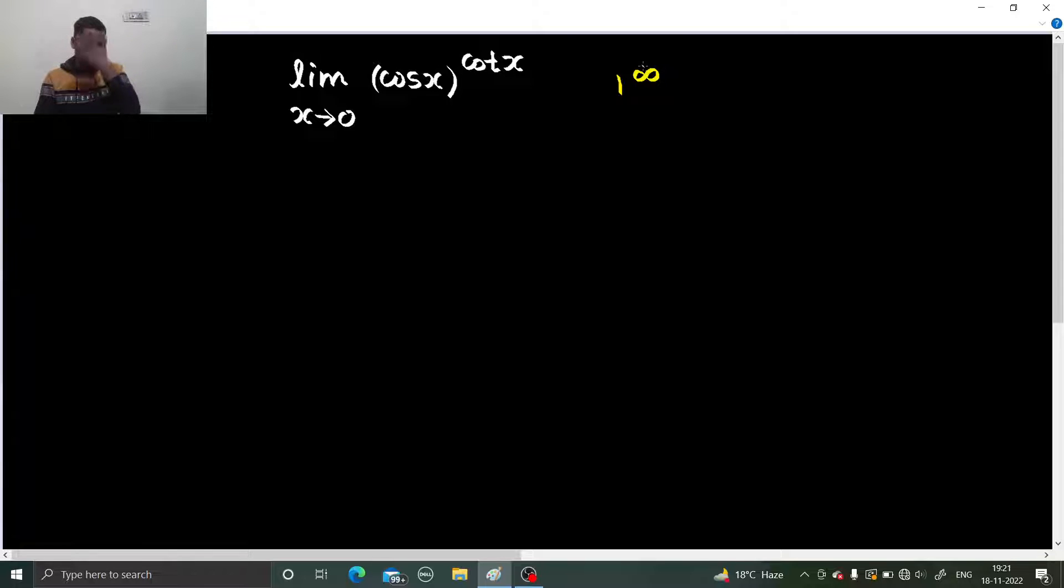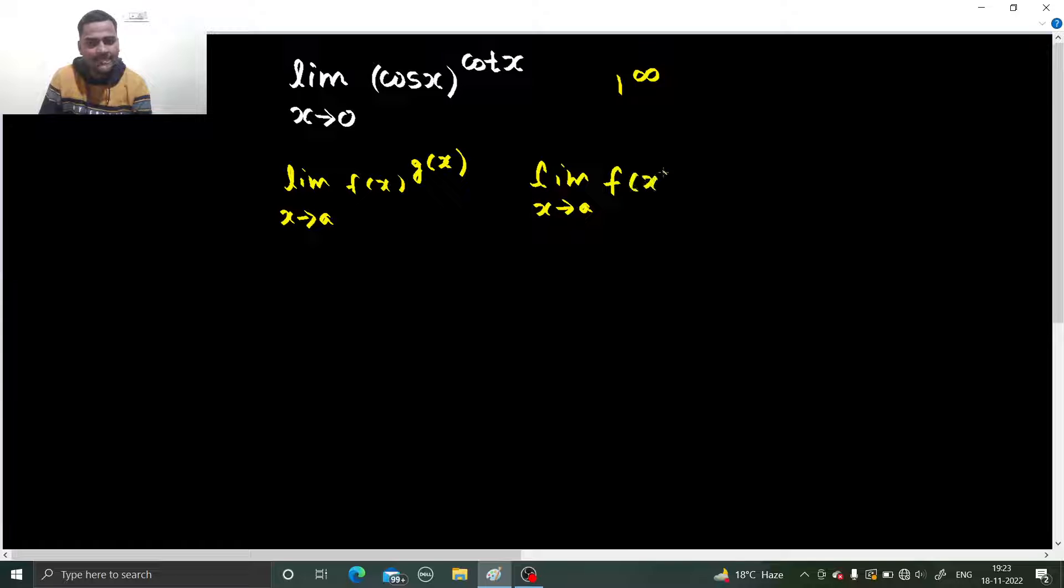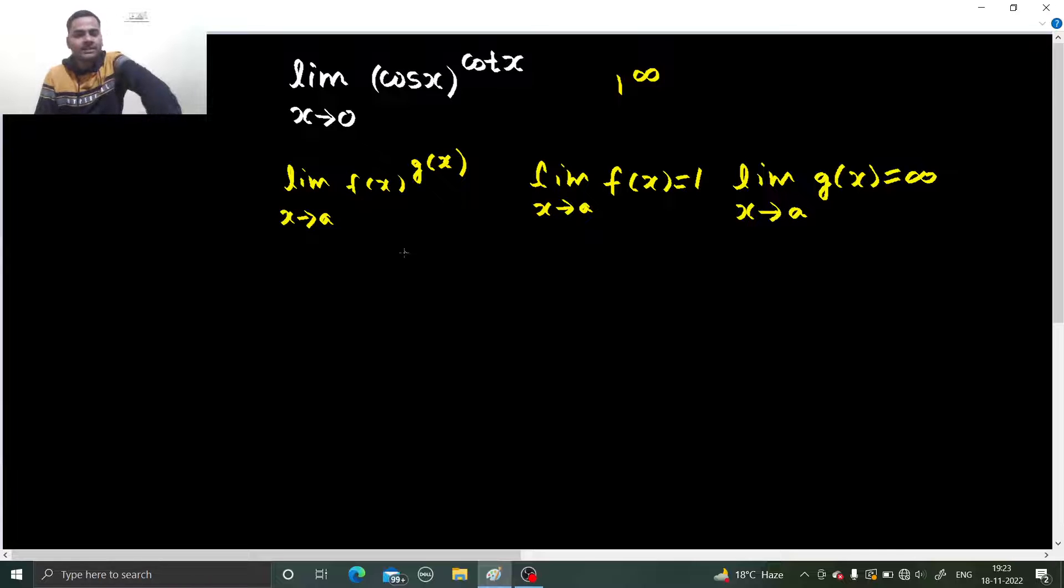So what we do in that case, we write the given limit as... let me introduce you to the concept. So whenever we have this form, if we have limit x tending to a, f(x) raised to power g(x), and you know that limit x tending to a, f(x) is giving you 1 and limit x tending to a, g(x) is giving you infinity, so in that case, we write this limit as e power limit x tending to a, g(x) comes down and we subtract 1 from f(x), fine enough?